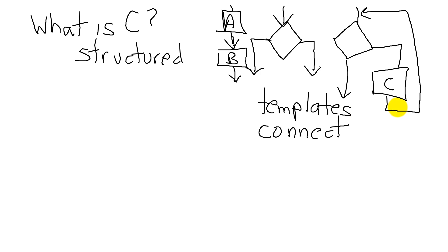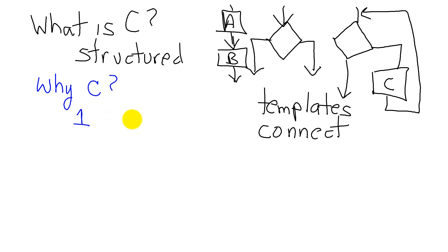Then we can ask the question: why am I learning C? There are two answers. One is if we look at all programs, we see that C is the number one, with the highest percentage — 18% of all programmers in the world in 2013 use C.